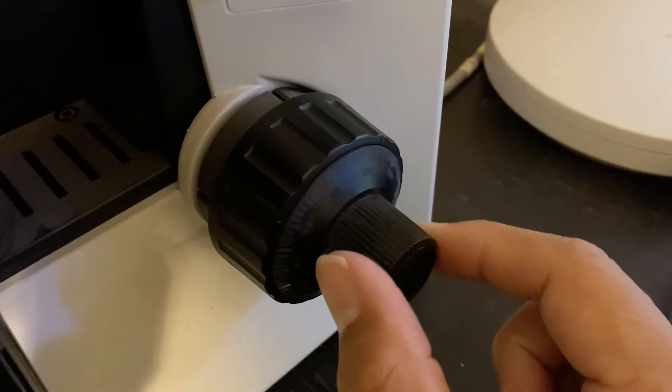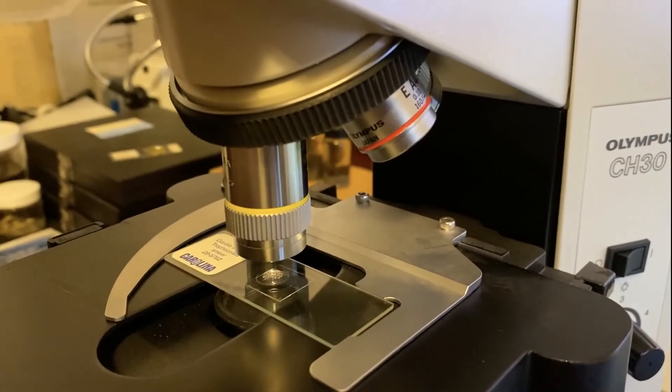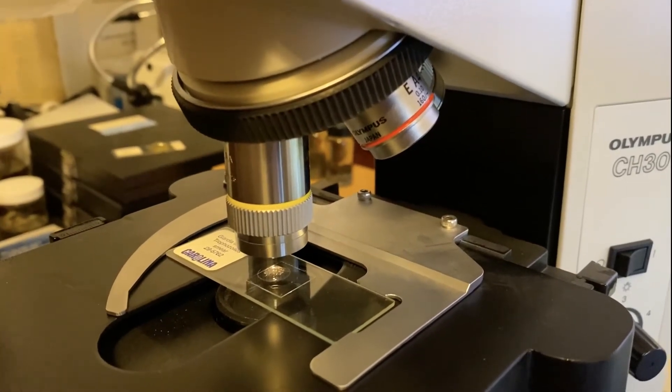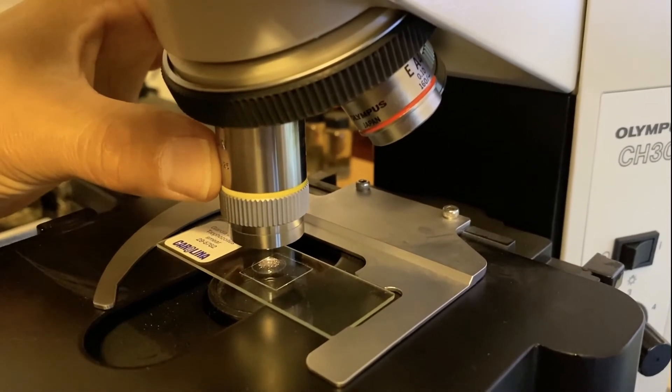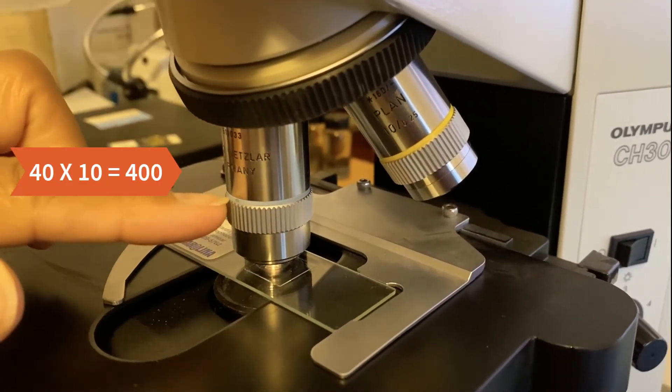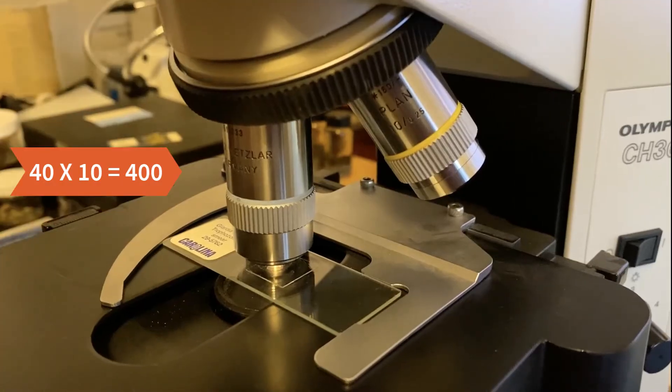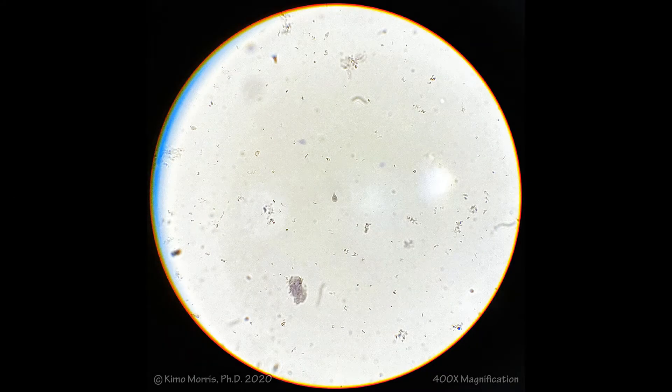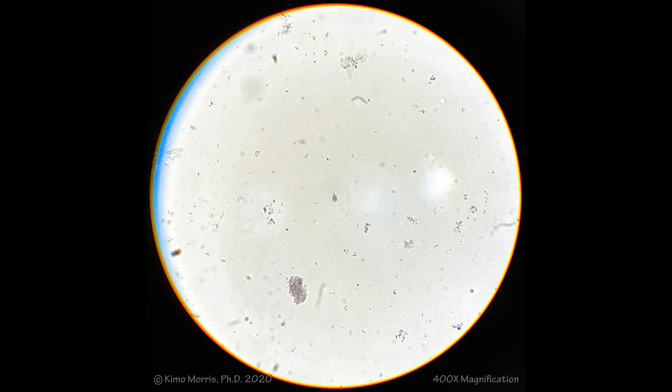So at this point, you want to use your fine focus to just make sure that you're focused in on the proper plane. So if it's slightly blurry, you would be using your fine focus here. And from this point on, you're only going to use your fine focus. Now I'm going to switch to the next objective lens. This is a 40 times objective, so my total magnification is 400 times. Again, I'm using my fine focus just to make sure that I'm still in the proper plane, and I'm going to move my little critter right here into the very center of my frame.